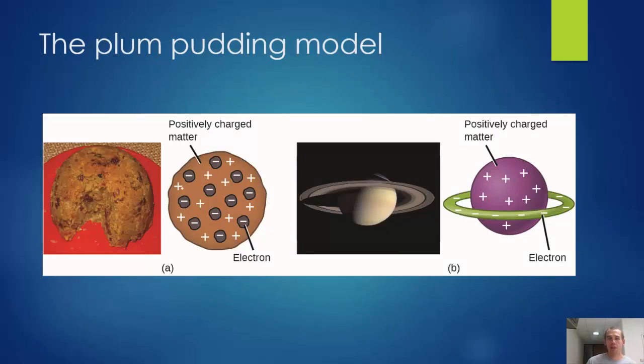Which led Thomson to propose the plum pudding model. He proposed this in 1904. He said we have these electrons that are scattered throughout a positive substrate, much like there are these little chunks of fruit in this pudding, English dessert. He wasn't the only one to propose that there would be an arrangement of positive and negatives. This model was put forth in 1903 that the electrons are like rings around a positively charged body like Saturn has rings.